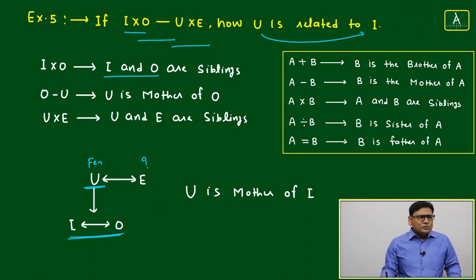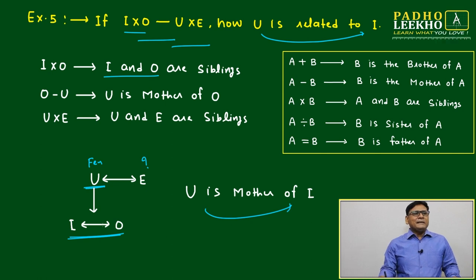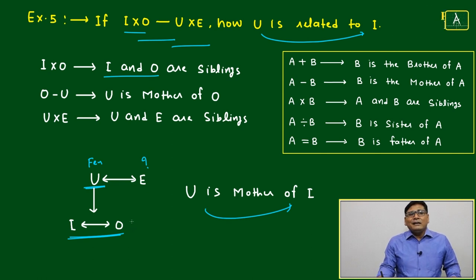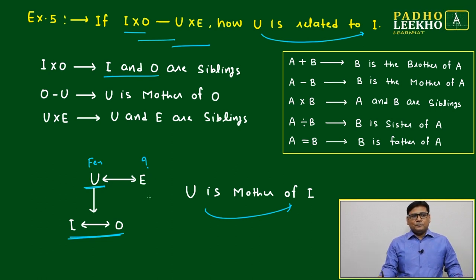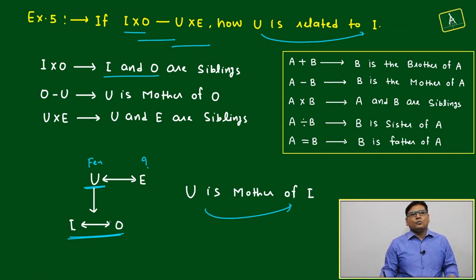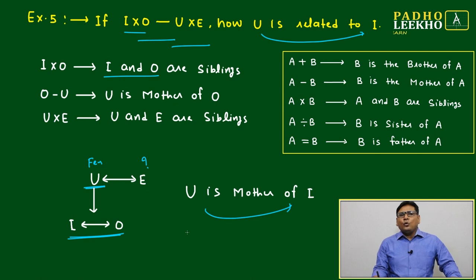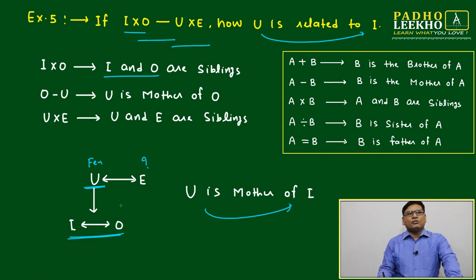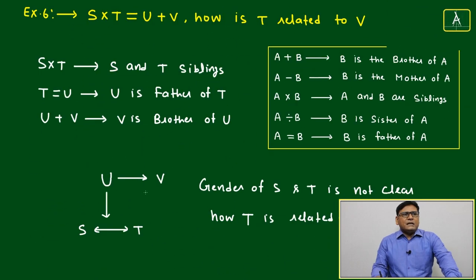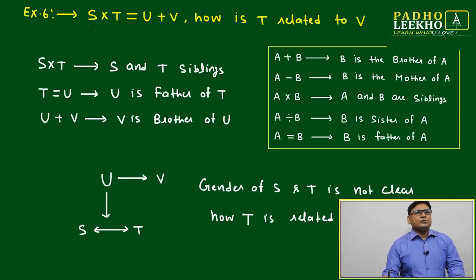Because the gender of E is not clear, we cannot say in a very clear way what relation exists between E and I or O. If E is masculine, E will be maternal uncle of I and O; if E is feminine, E will be maternal aunt. But the question asks about U and I — U is the mother of O, and I is the sibling of O, so U is of course the mother of I also.